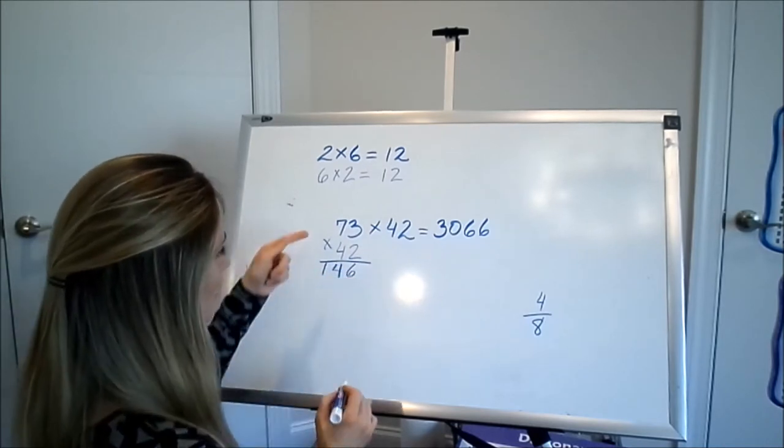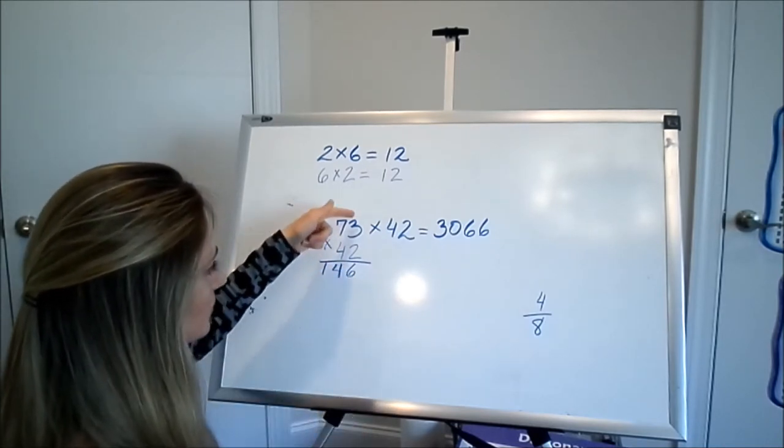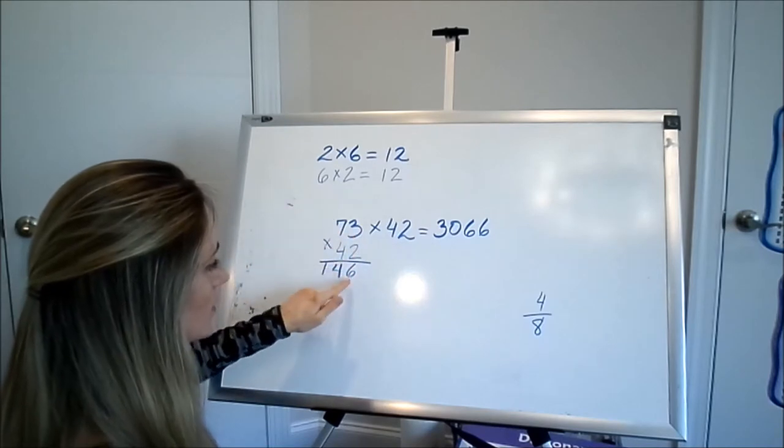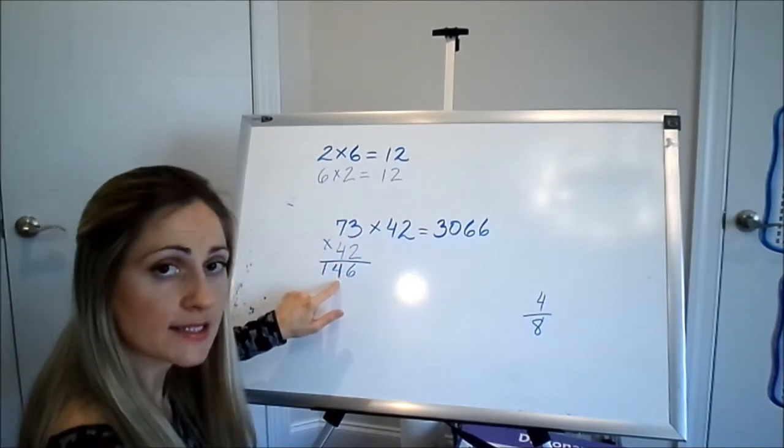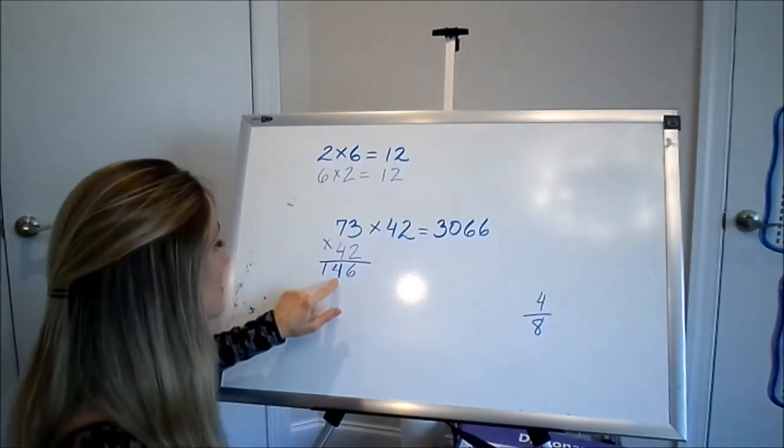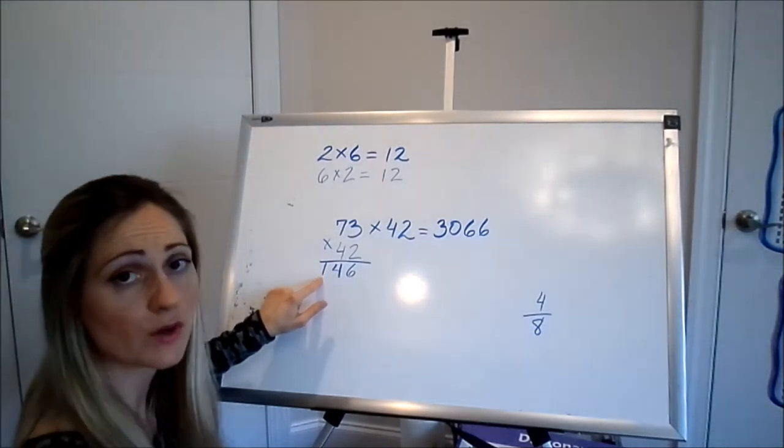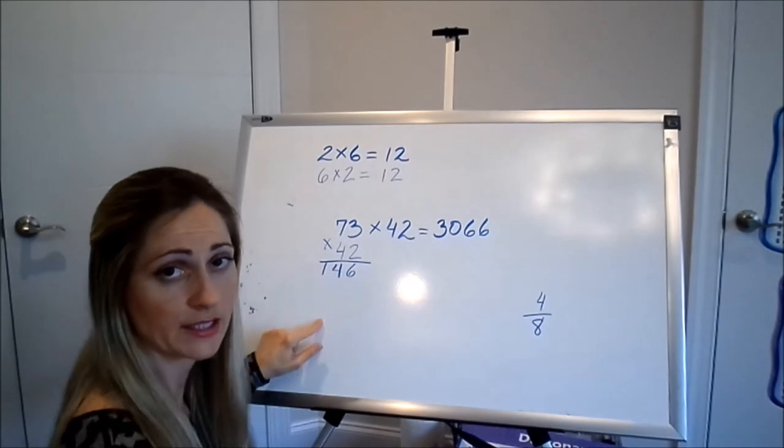Make sure that you align. The 6 is a ones place, so it goes underneath the ones place. The 4 is a tens place, it goes underneath the tens place. If you put this 1 in the wrong place, your whole answer will be wrong.